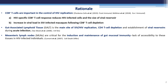The gut-associated lymphoid tissue, GALT, is one of the main sites of SIV and HIV replication, CD4 T cell depletion, and viral persistence. In particular, the mesenteric lymph nodes, which drain the small and large intestine, are critical for the induction and maintenance of gut mucosal immunity. Unfortunately, the dynamics of CD8 T cells during HIV infection within this compartment are understudied because of the lack of accessibility of this tissue.